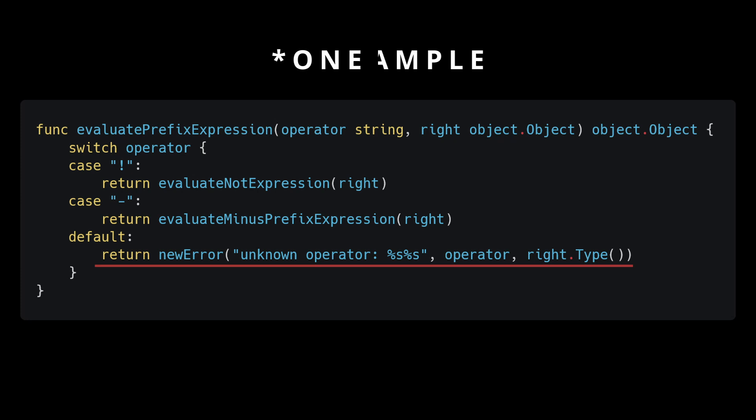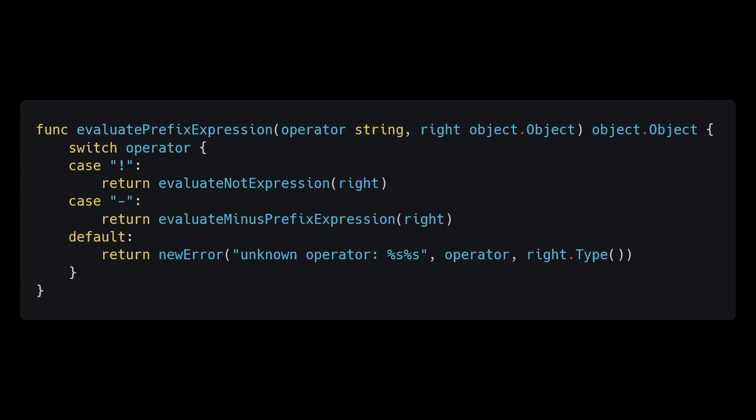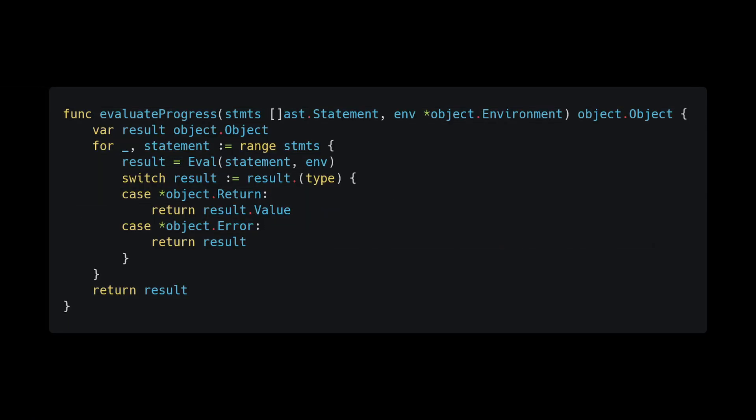Feel free to write your own error messages — use ChatGPT or look at the source code in the description for the error strings I'm using. Now that we are returning error objects, we need to stop evaluation when we encounter one. We do this in our eval_program method and our evaluate_statement_block method — simply check if the evaluation result is an error and return if it is, though it does mean switching up our code slightly.